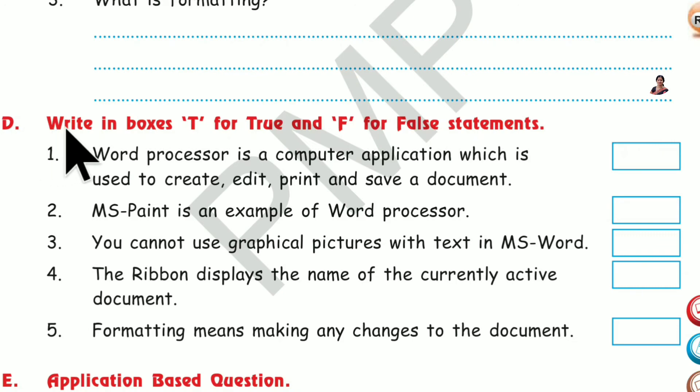D. Write in boxes T for true and F for false statements. Number 1. Word processor is a computer application which is used to create, edit, print and save a document. Yes, that is true.